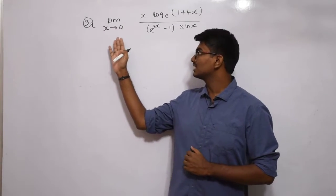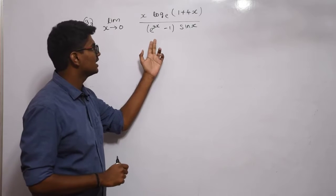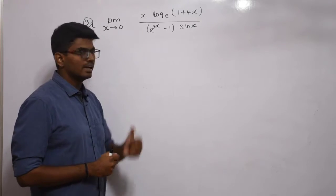We have another problem here. Limit x tends to 0: x log_e(1+4x) divided by (e^(3x) - 1) sin(x).